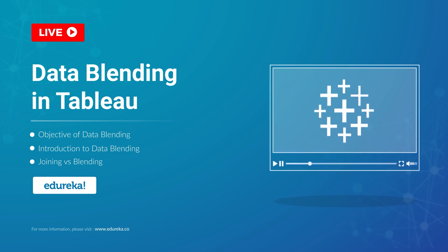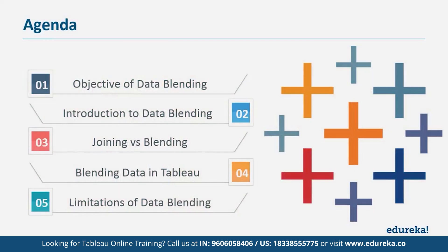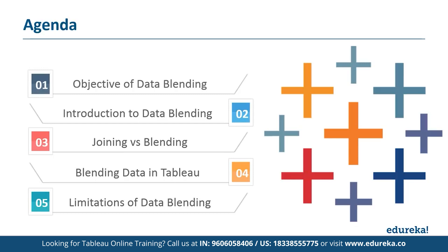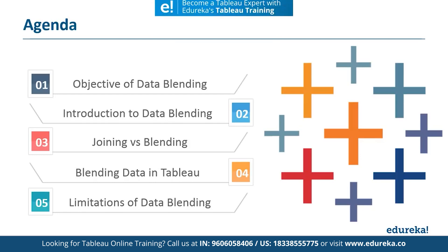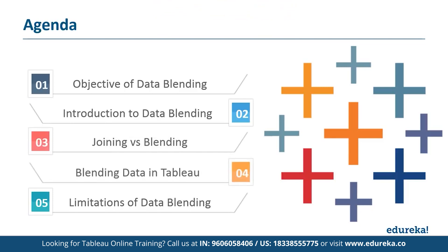Before we begin, let's discuss our agenda for today. First, we're going to talk about the objective of data blending. Then we're going to talk about what data blending essentially is and how it works in Tableau. Then we're going to discuss a concept called joining and see how it is different from data blending. Then we're going to see how you can do this — a very short demo with a few simple steps. And finally, we're going to discuss a few limitations in this process. So without much ado, let's get straight to the module.